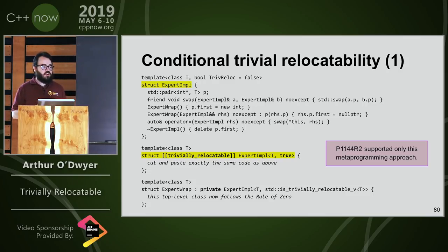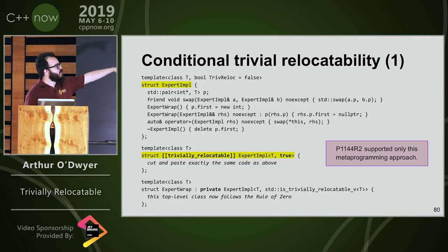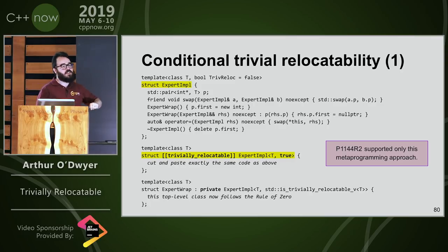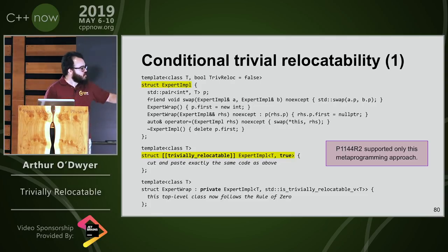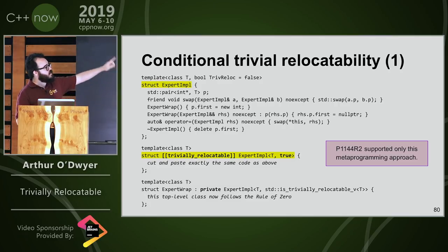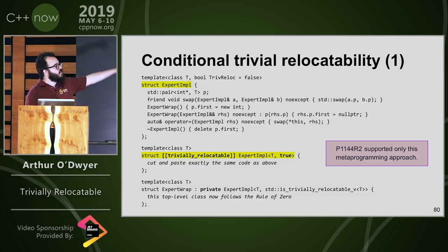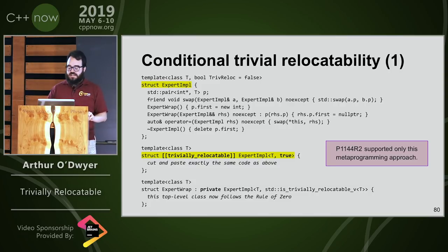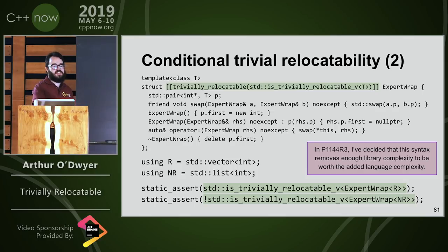Here's one way you could do it — this was the only way proposed in R0 of the paper. I just said, I like metaprogramming. We make a partial specialization here for ExpertImpl. Usually it's not trivially relocatable, but in the case that the bool parameter is true, I'm going to make it trivially relocatable using the warrant attribute. Then I can inherit from that, follow the rule of zero, and inherit the trivial relocatability of my members and bases. My base will be trivially relocatable or not depending on that template parameter — which is just saying: if T is trivially relocatable, I want to be trivially relocatable; otherwise I don't. Up to R2 I supported only this mode of metaprogramming, and I did the initial libc++ patch entirely in this style.